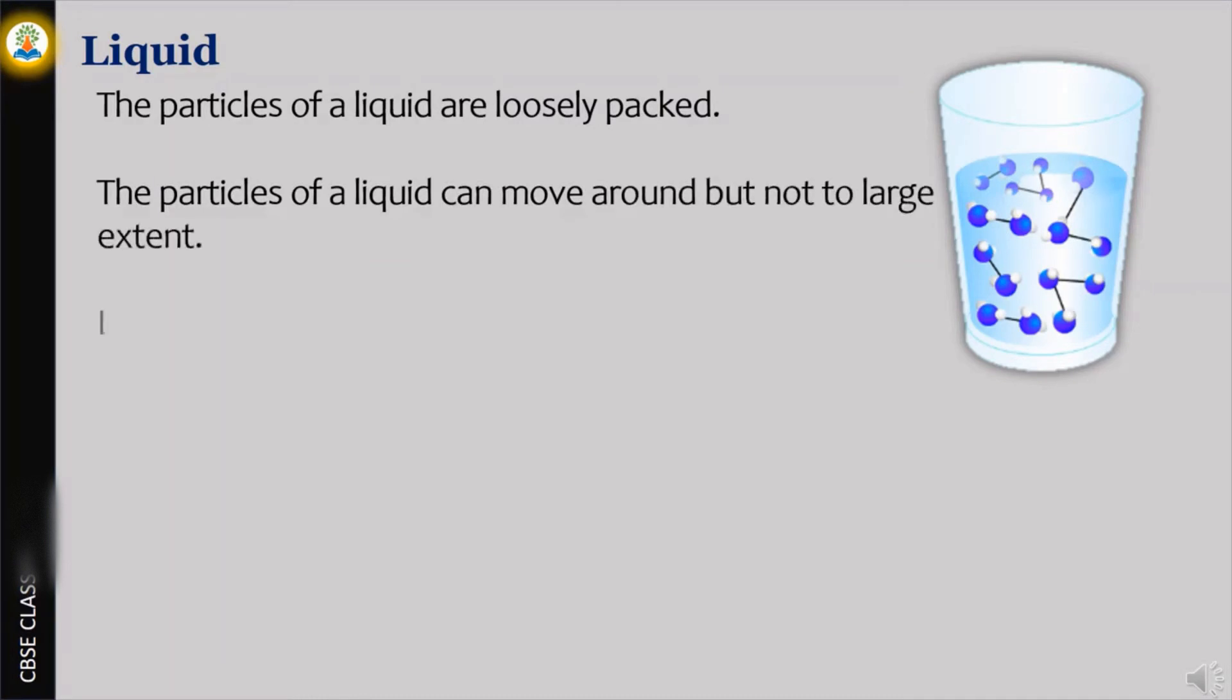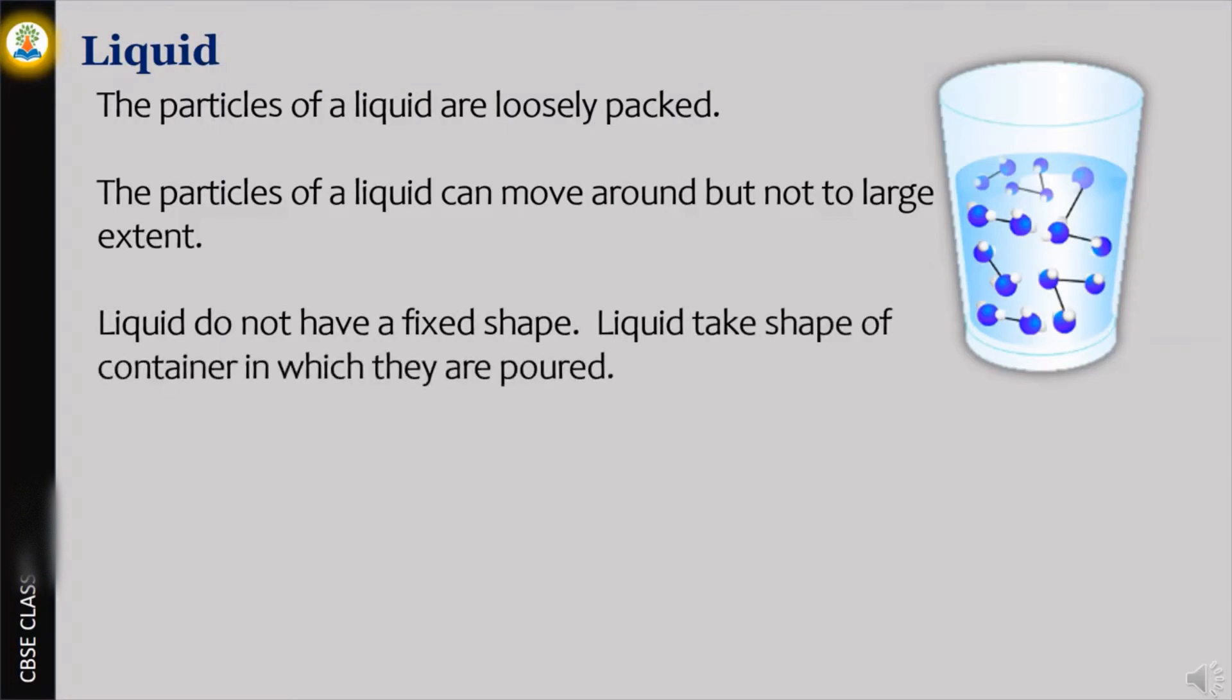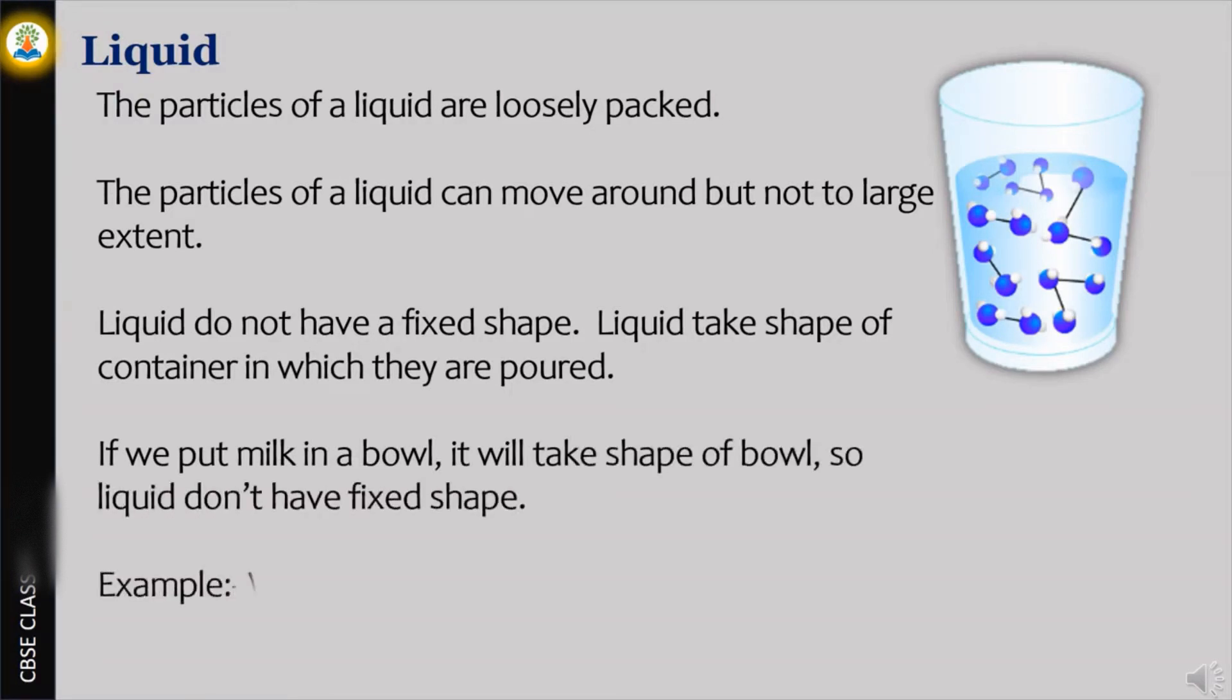Liquids do not have a fixed shape. Liquids take the shape of the container in which they are poured. If we put milk in a bowl, it will take the shape of the bowl, so liquids don't have a fixed shape. Examples of liquids are water, juice and paint.